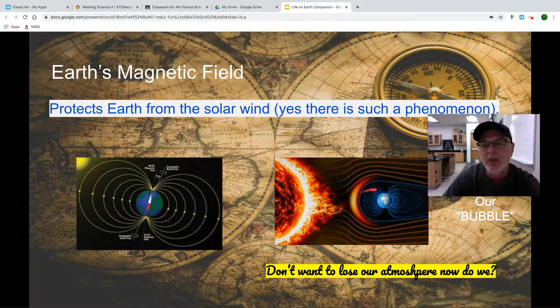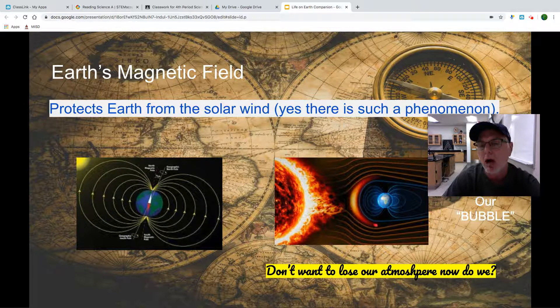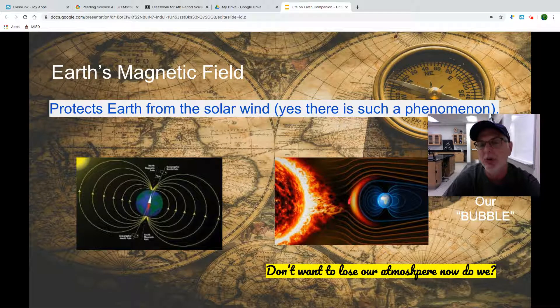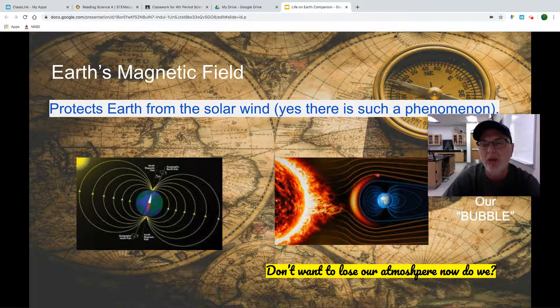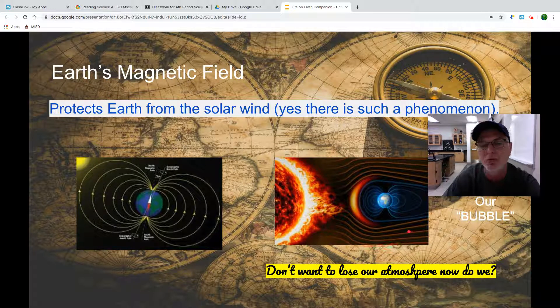And what happens is our magnetic field comes out from around our Earth and actually blocks a lot of this. So this illustration is fairly accurate as to what it's doing as far as the solar wind, which you see is bypassing us.